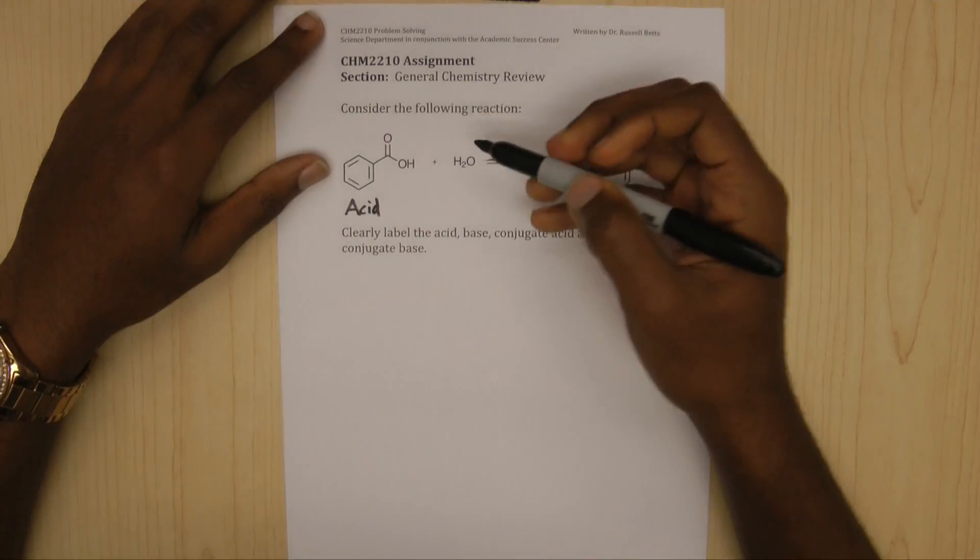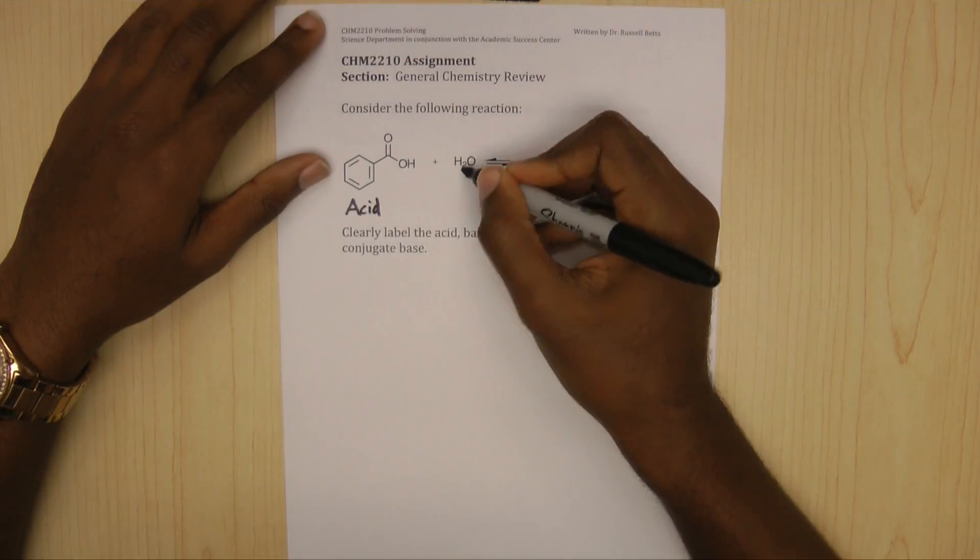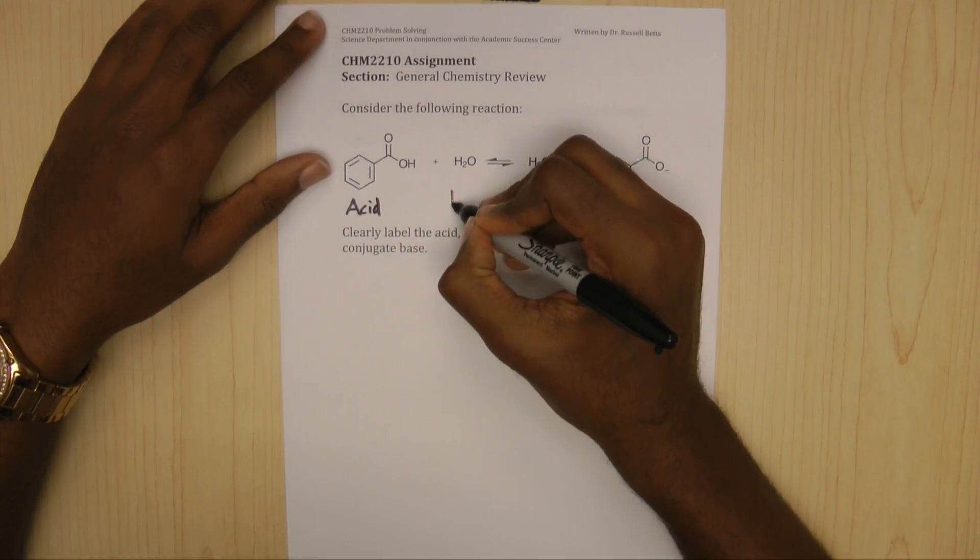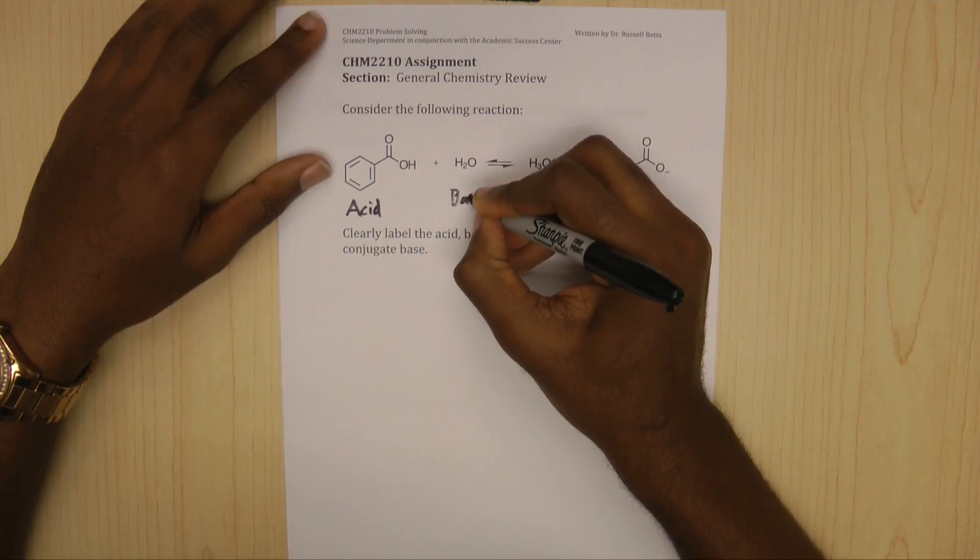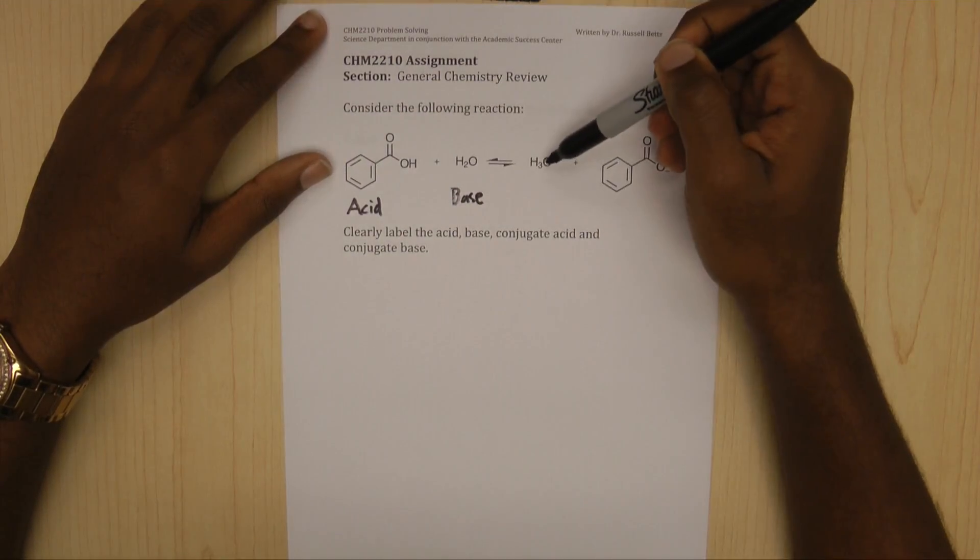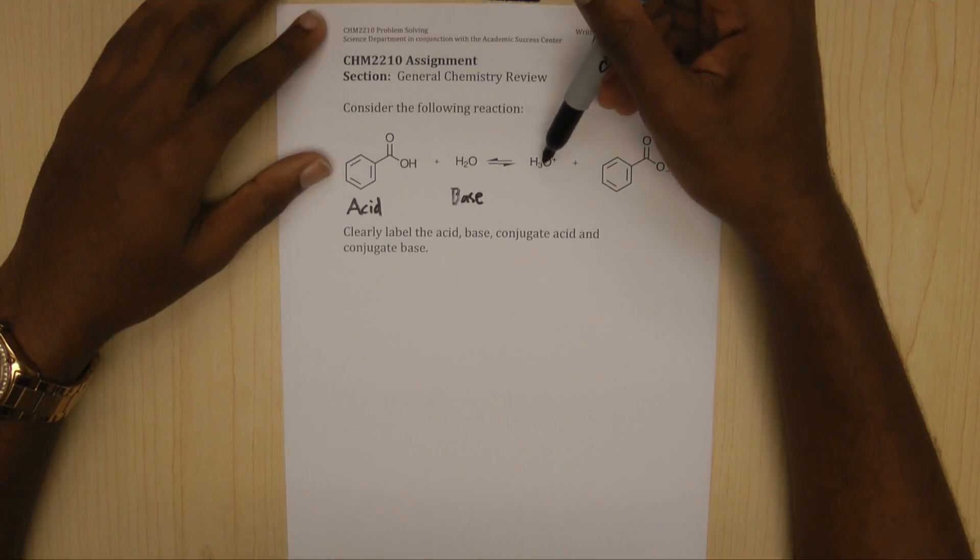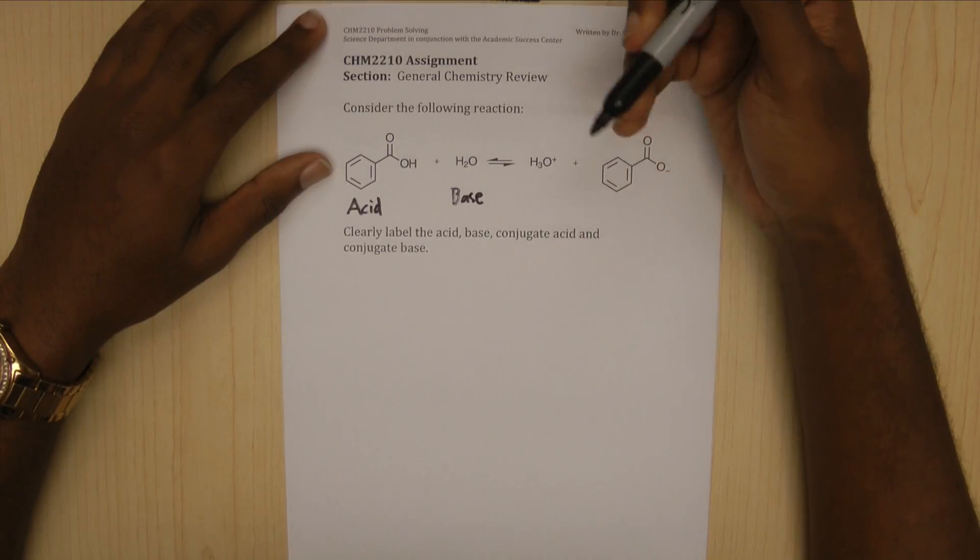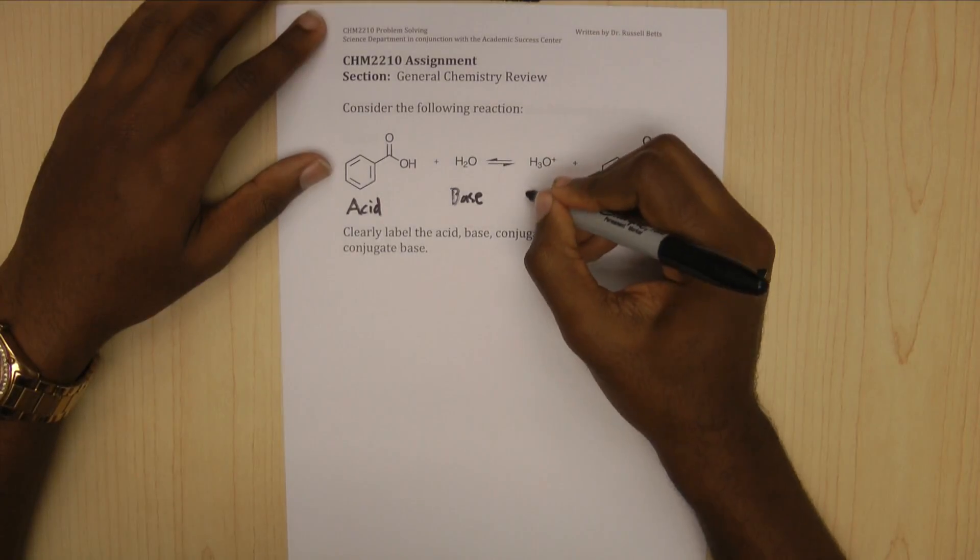Right? So then, by definition, this has to be a base because it's accepting a proton. Now, this, like I said before, H3O can represent the same thing as an H plus ion. So this is our conjugate acid.